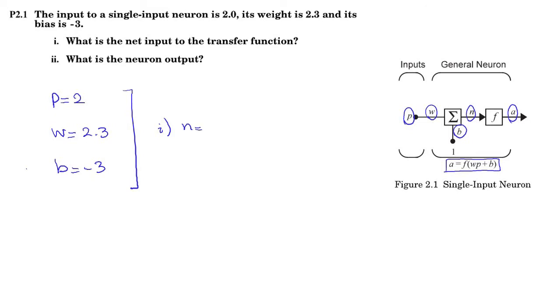N equals WP plus B equals 2.3 times 2 minus 3, 4.6 minus 3, 1.6. So N equals 1.6.